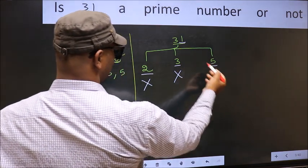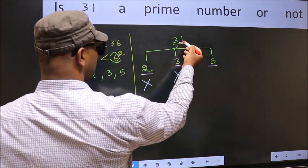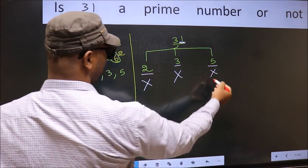Next number 5. Last digit is neither 0 nor 5, so this is not divisible by 5.